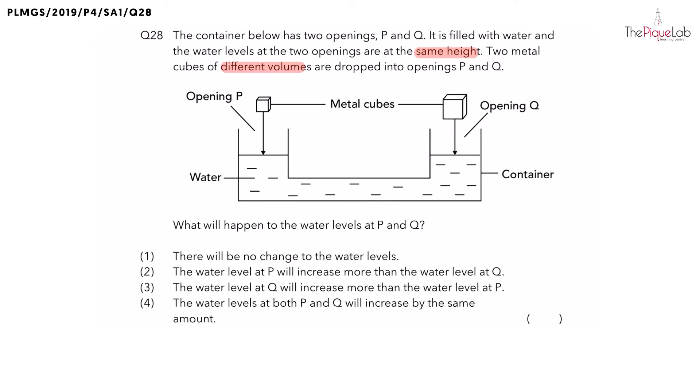When we take a look at this diagram, I want you to tell me what is the difference between the metal cubes. The metal cube dropped at opening Q is bigger than the metal cube in opening P.